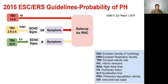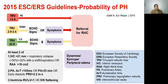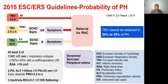The symptoms are dyspnea, syncope, or peripheral edema. Echo signs pertain to measurements related to the inferior vena cava or right atrial area, pulmonary artery, and right ventricle — if at least two of these three categories are fulfilled, the patient meets the echo sign criterion. The problem with these guidelines is that tricuspid velocity cannot be obtained in 20 to 39% of pulmonary hypertension patients, which is how echo underestimates pulmonary hypertension.